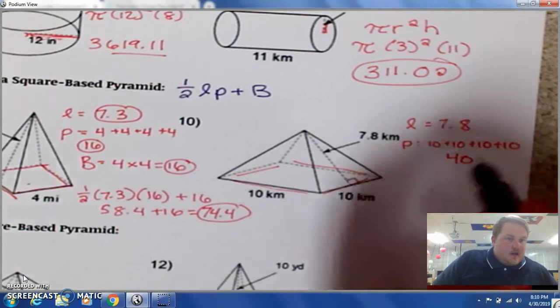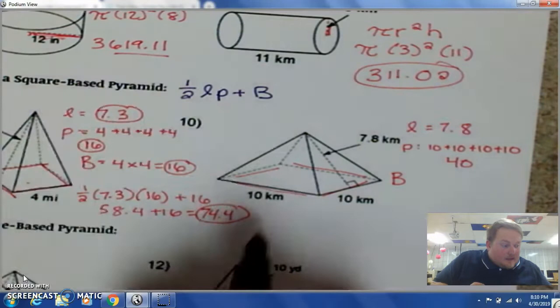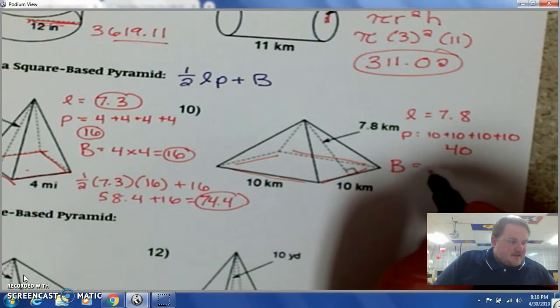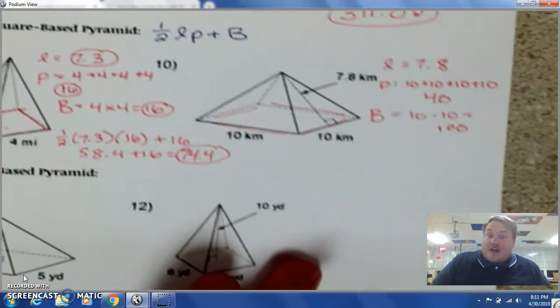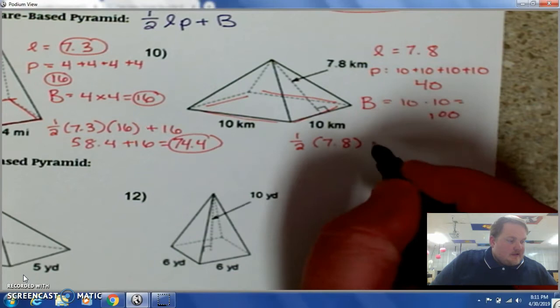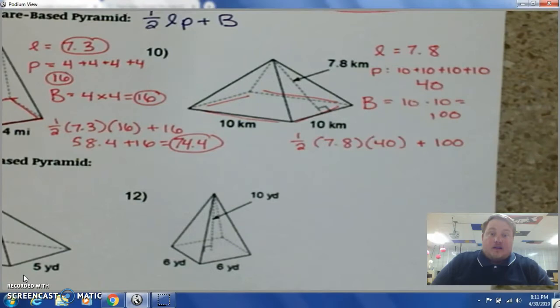And our big B, area, the little b is just the line, but the area is length times width, 10 times 10, which is 100. So let's go ahead and put that into our formula. We have 1 half times 7.8 times 40, plus 100. And let's calculate it.